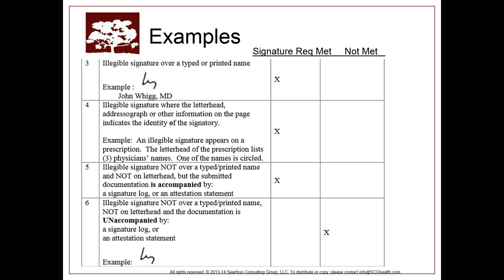There are some examples in the slides from a MedLearn — MLN — article, which I highly recommend you check out. One notable example is an illegible signature, but there's a name at the bottom saying 'John Wig, MD.' Make sure you have those credentials in there. The government says that's sufficient. What's not sufficient is to have an illegible signature with no name anywhere on the page. So best practice: put the name everywhere and have the practitioner sign as part of that.